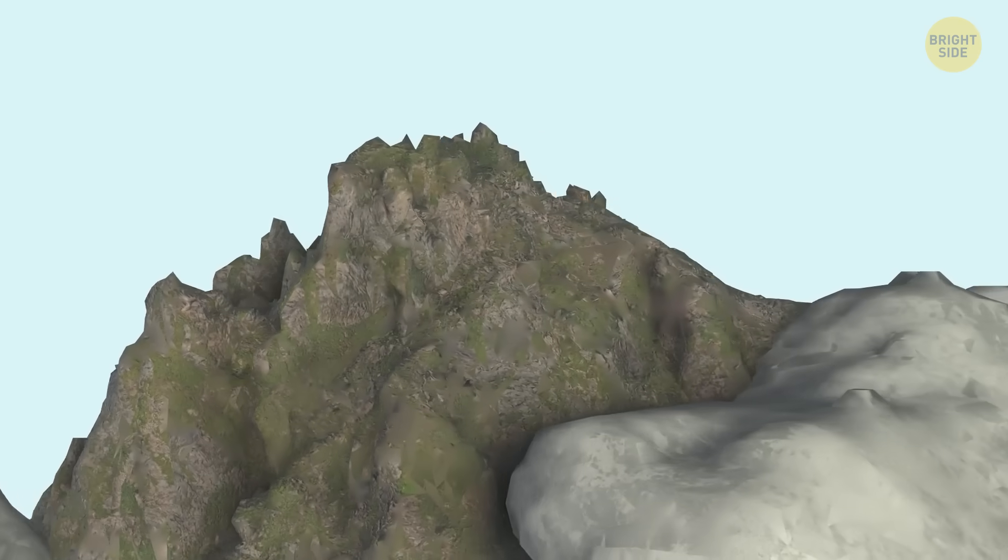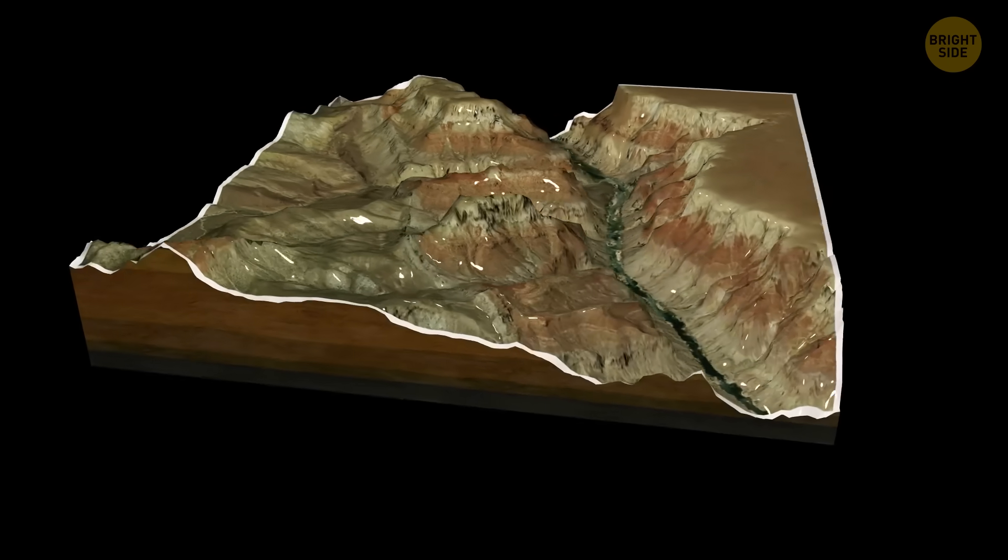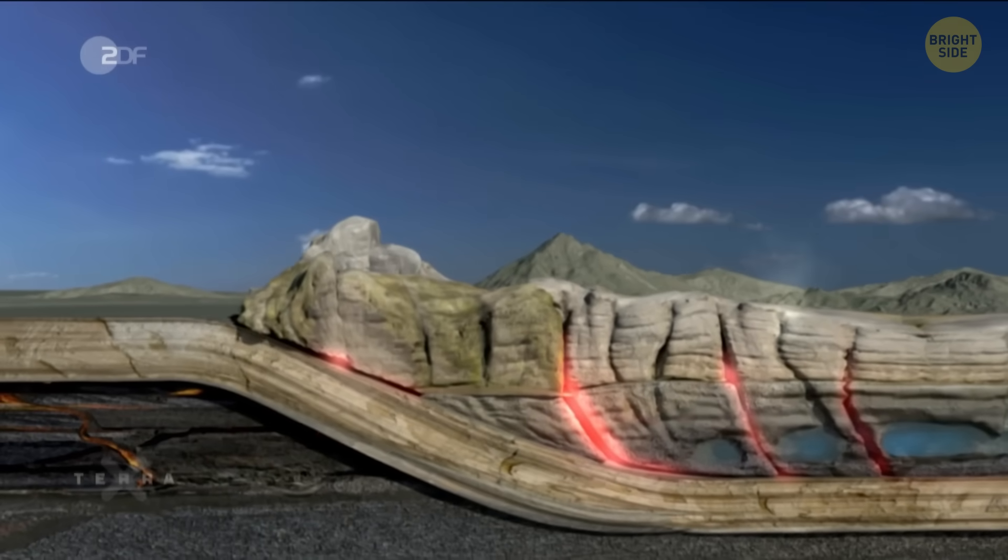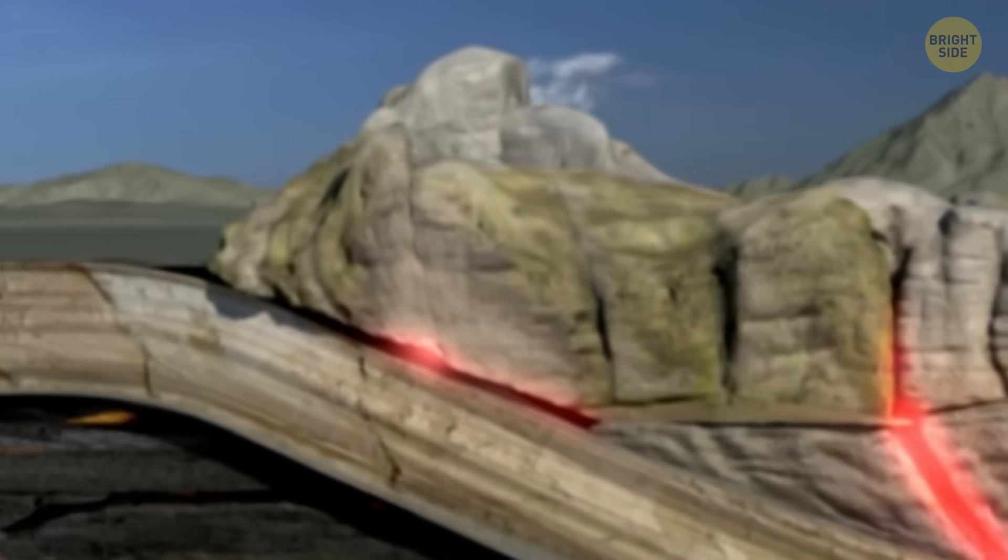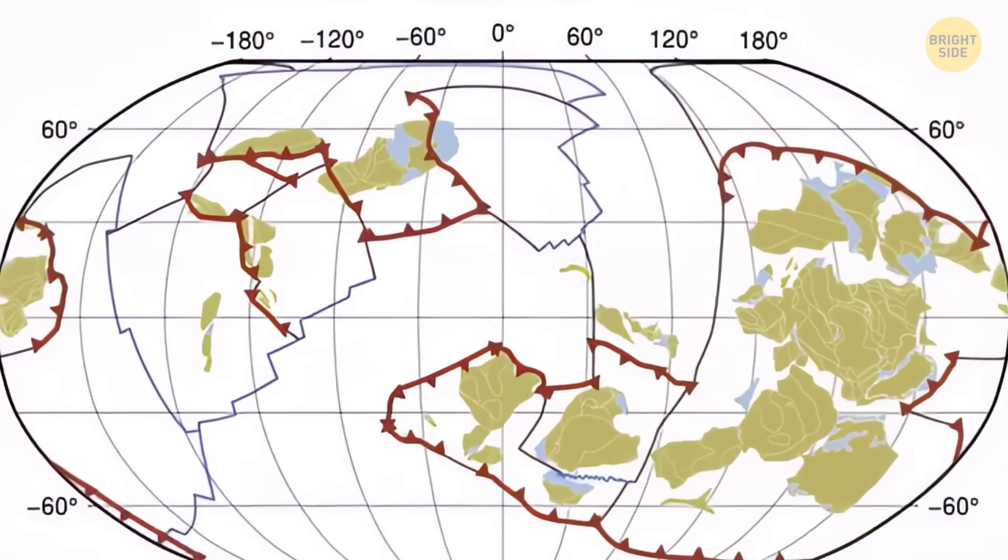Mountains have not always existed on the planet in this form. They appeared as a result of a large-scale collision of tectonic plates. Two giant solid chunks of ground are moving toward each other, then crash, and boom! Millions of tons of the Earth's crust pile on top of each other, mix, and form ledges and gorges.